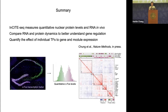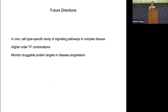In summary, we developed InsightSeq to measure nuclear protein levels quantitatively alongside the transcriptome in vivo. We can compare RNA and protein dynamics to better understand gene regulation and quantify the contribution of individual transcription factors to gene module expression. In the future, we want to apply this for cell-type specific profiling of signaling pathways in tissues, in disease and homeostasis, to disentangle higher-order transcription factor combinations, and to monitor druggable protein targets during disease progression.